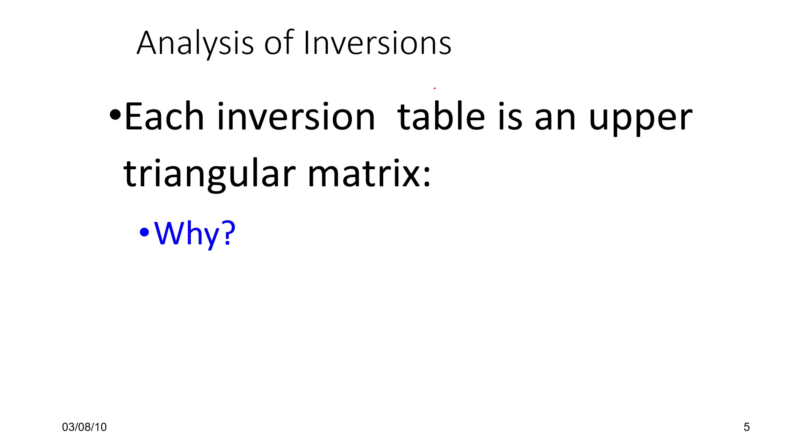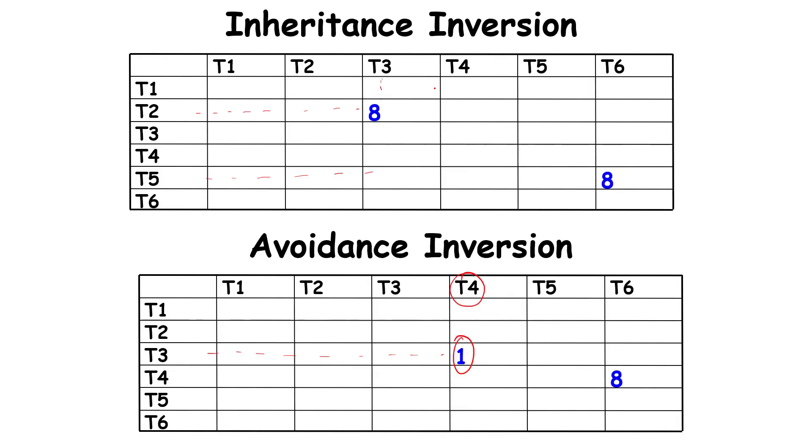Now that we have seen these examples, what we see is each inversion table here is an upper triangular matrix, because we are looking at priority inversions. Everything is pretty much above this line because we are looking at inversions. T1 will not get inverted by anybody. T2 will get inverted only by the lower priority tasks, which are T3, T4, T5, T6, and so on.